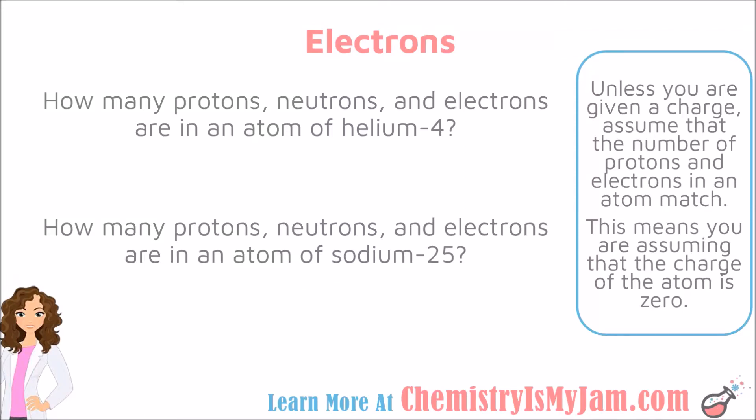This is Rebecca from ChemistryIsMyGem.com. In this video, we're going to be focusing on electrons and ions, which are atoms with a charge. For electrons, unless you are given a charge, you can assume that the number of protons and the number of electrons match within an atom. This means that you are assuming that the overall charge of the atom is zero.